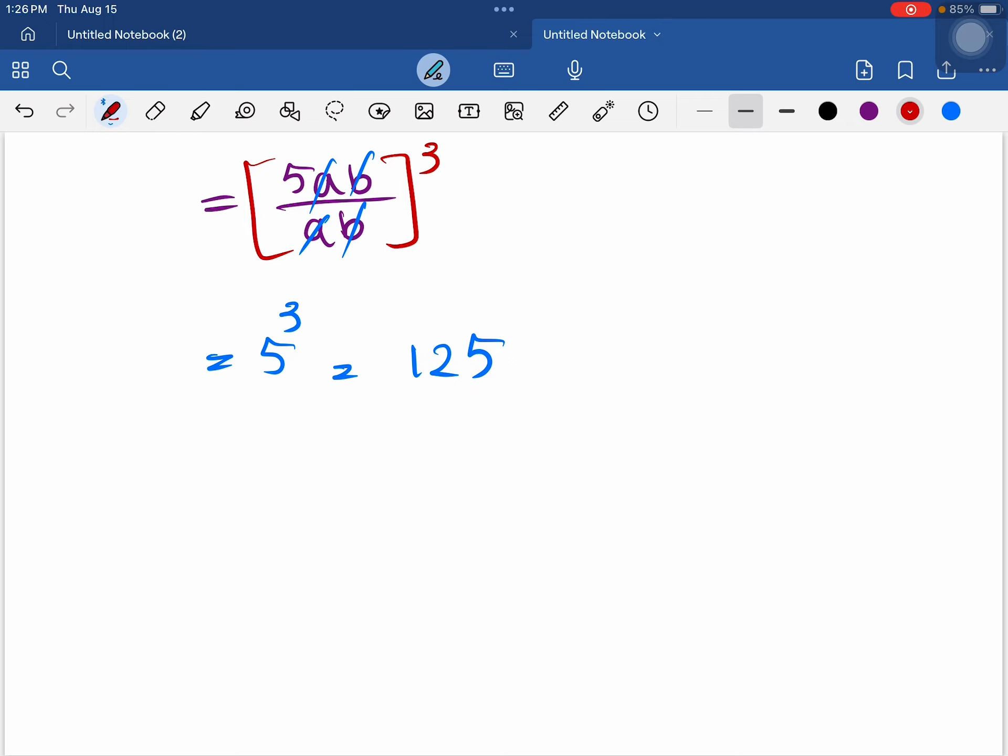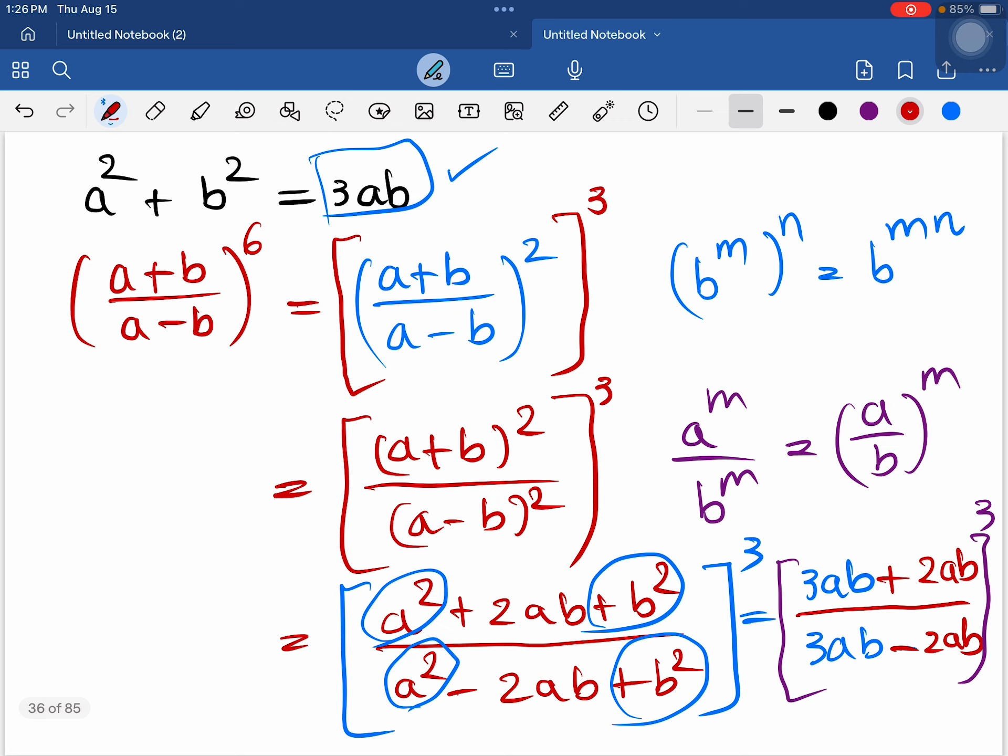125 is the value of a plus b over a minus b the whole power 6.